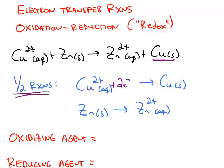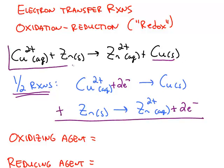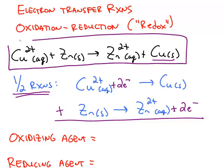And for zinc to turn into zinc 2 plus, it has to lose two electrons. If you add together the two half reactions, you get the overall reaction because the electrons cancel.